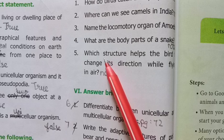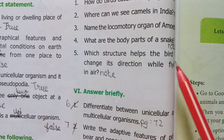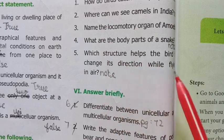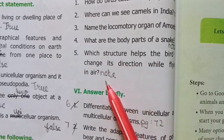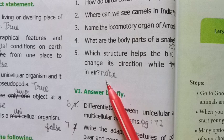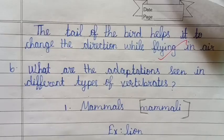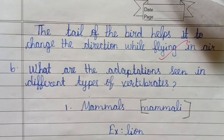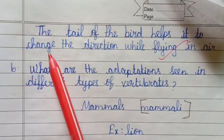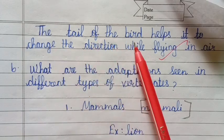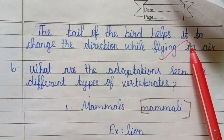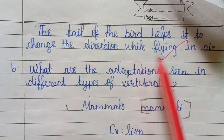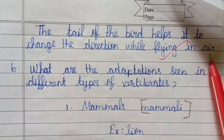Next question: which structure helps the bat to change its direction while flying in air? Answer: the tail of the bird helps it to change direction while flying in air.